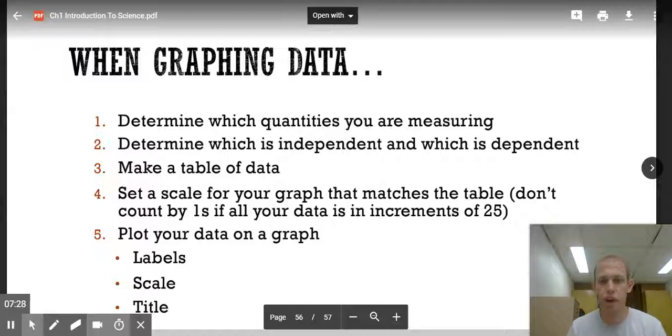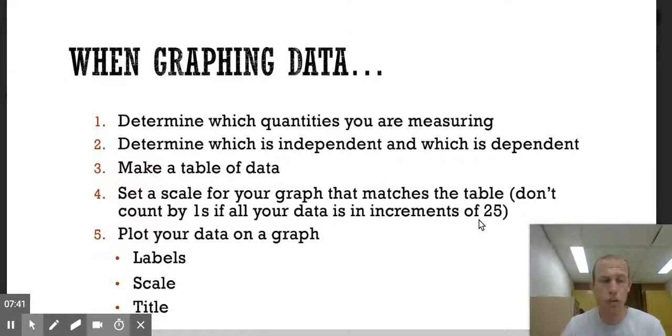Set a scale for your graph that matches the table. Don't count by ones if all your data is in increments of 25s, or like 25s might be an example of you count by 25 cents each time, or you're counting by 25 years each time. So don't put tick marks every one. Put a tick mark for every 25. And then when you go ahead and plot your data on your graph, make sure you have your axes labeled, you have your scale, and you have a title. Those are all the properties, the things that you need for a good graph so that people reading your graph know what you're talking about.